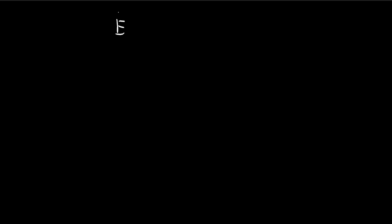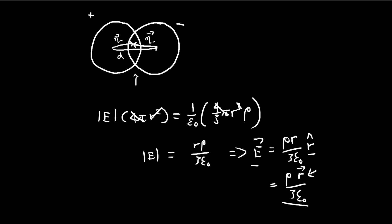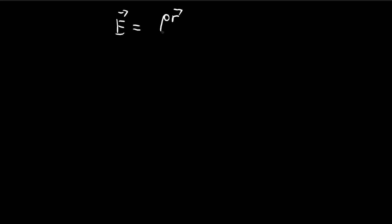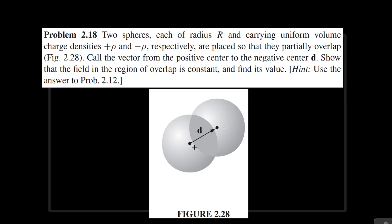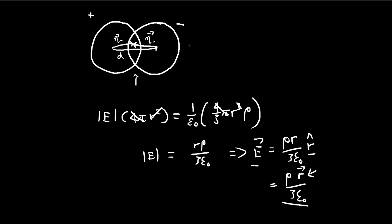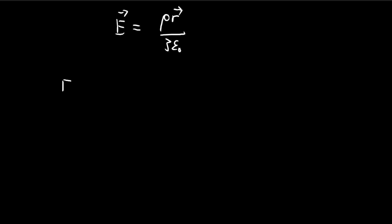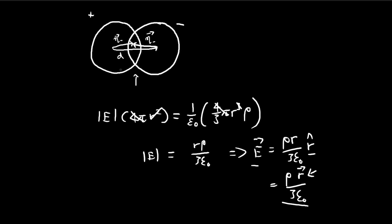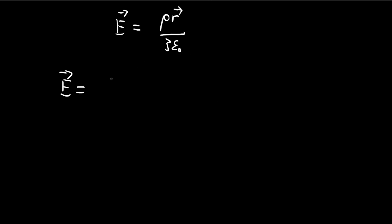So what can we do with this result that we just got? How are we going to use this to solve problem 2.18? The thing is, we can see that this is essentially a configuration with two spheres, so we can just add up the separate contribution from both of these spheres — it's just the principle of superposition. So the total electric field is going to be equal to the electric field from the positive sphere plus the electric field from the negative sphere.